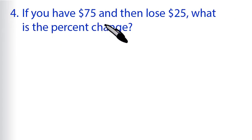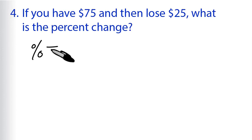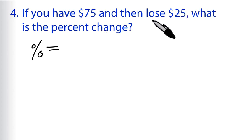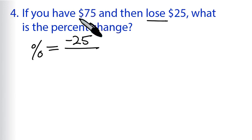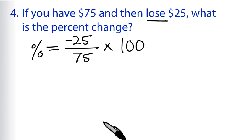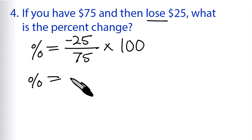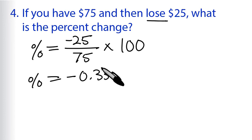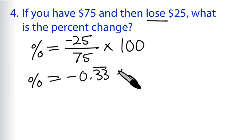Problem 4: if you have $75 and then lose $25, what is the percent change? Let's plug those numbers into our formula. The percent change equals the absolute change — we lose 25, so it's negative 25 — divided by the original amount, which is 75. Then we multiply by 100. So the percent change is negative 25 divided by 75, which equals negative 0.333 repeating, multiplied by 100.